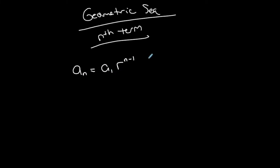This video talks about a geometric sequence and the nth term of a geometric sequence. My formula for the nth term of a geometric series is a1 times r to the n-1. This is my formula where a1 is the first term, which we know, and r is the common ratio. And n, of course, is the term number.